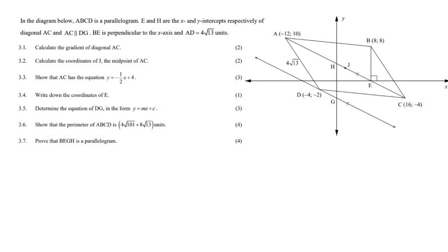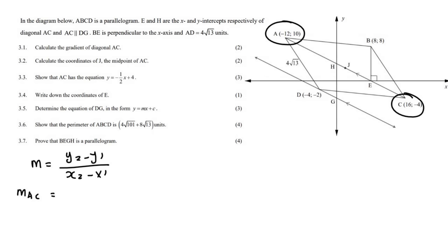Question 1: Calculate the gradient of diagonal AC. We know that the gradient formula is y2 minus y1 over x2 minus x1. For the gradient of AC, you can choose either point as your starting number. Going 10 minus minus 4 over minus 12 minus 16 gives you negative a half.